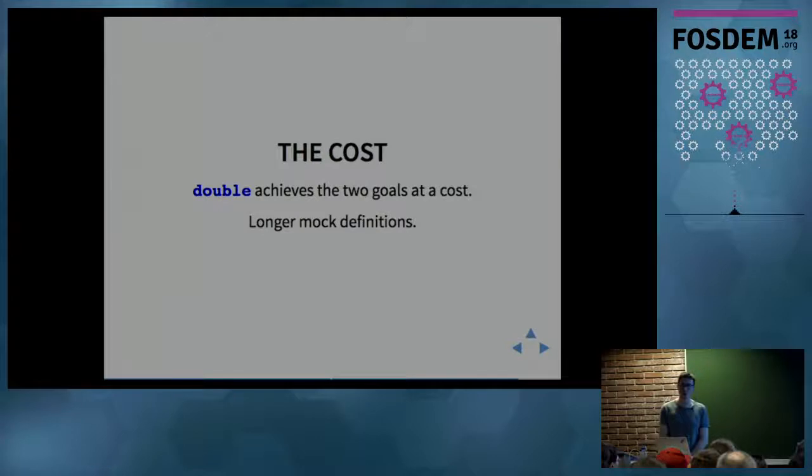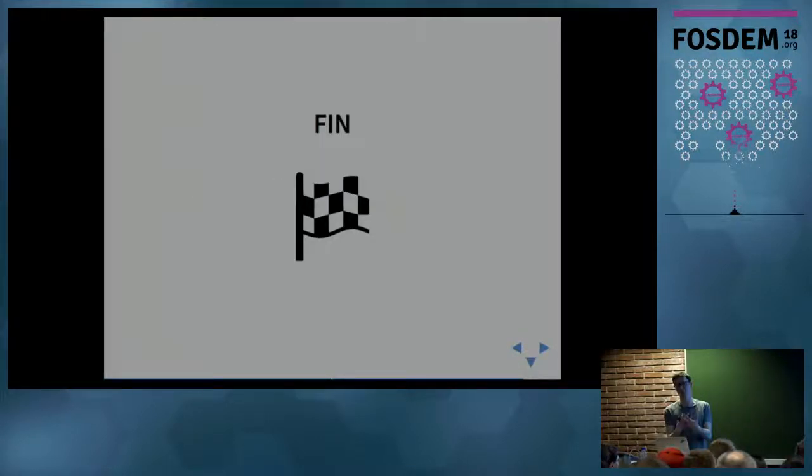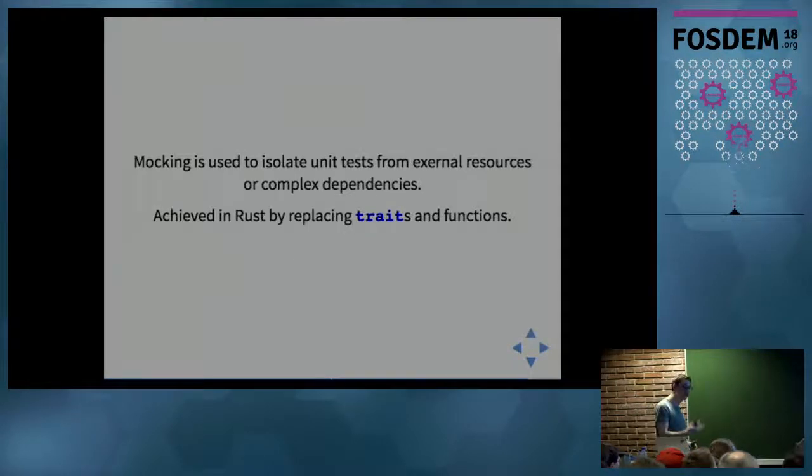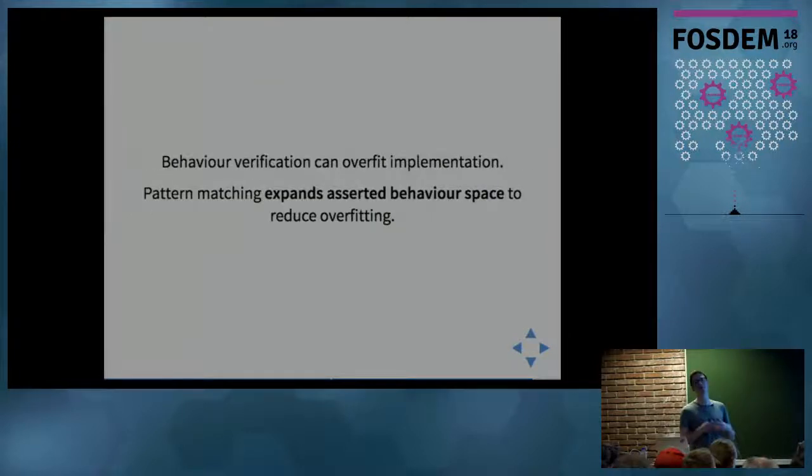That's pretty much the talk. To summarize, mocking is often used to isolate unit tests from external resources or large dependencies. One way of achieving this in Rust is by replacing traits and functions. However, using mocking can often overfit the implementation, so you need to be very careful. You need to have good tools that enable you to make these more nuanced assertions, not just you were called with exactly this. You need these more looser assertions so that your developers don't hate their lives a year into the project and have to constantly change test code when they slightly change the implementation.